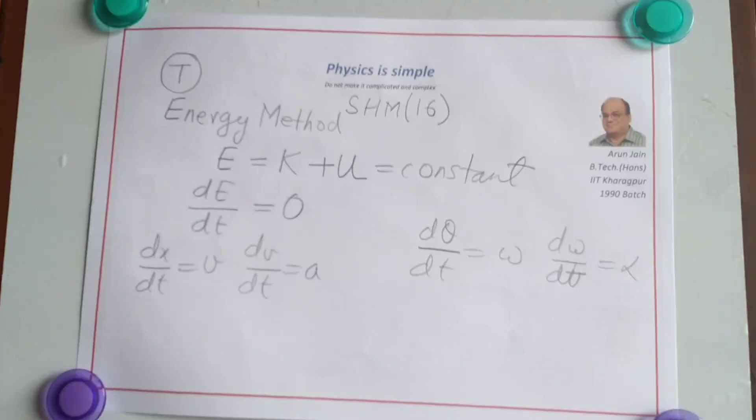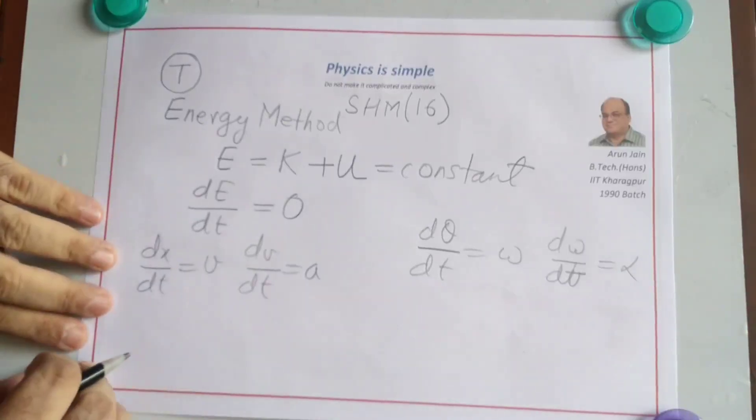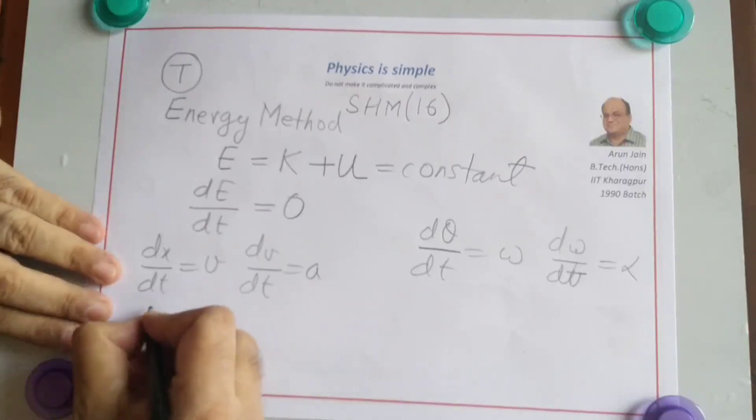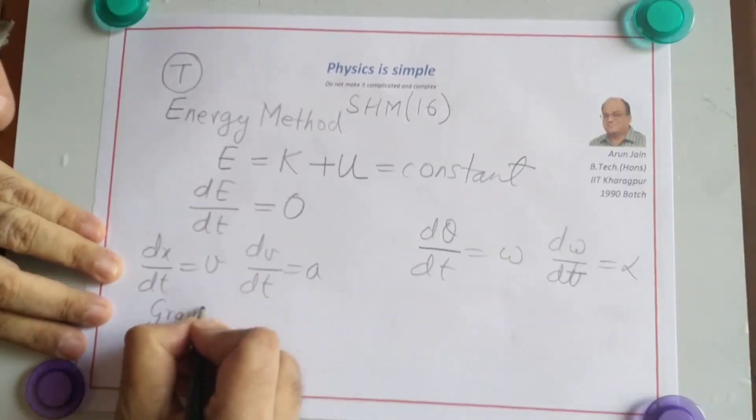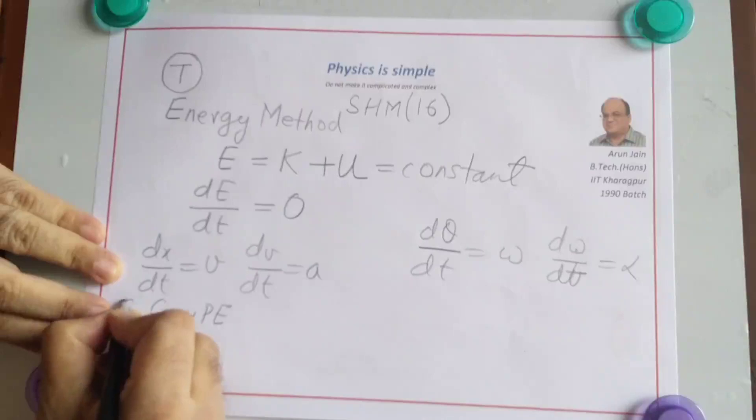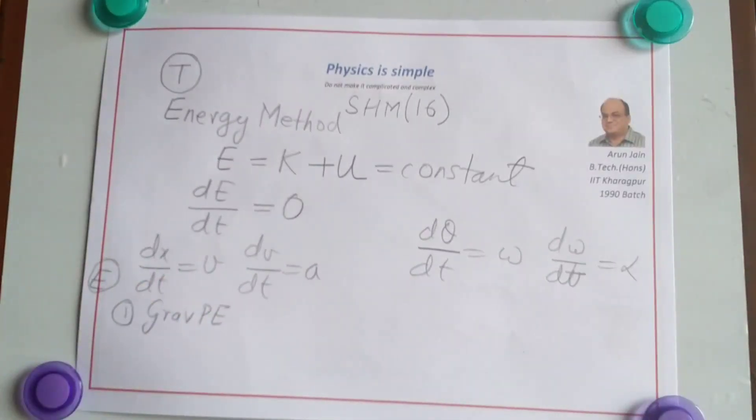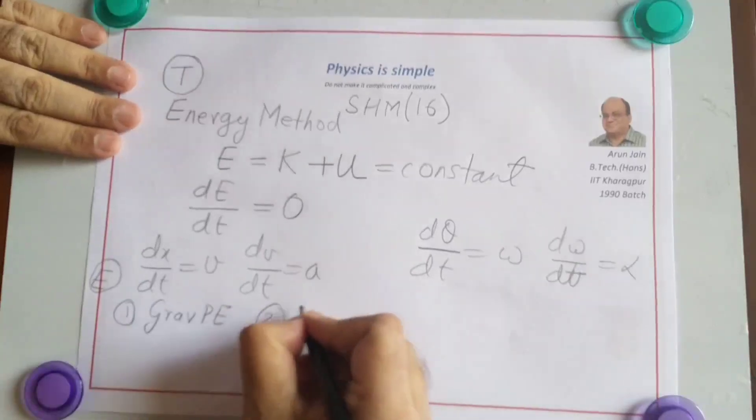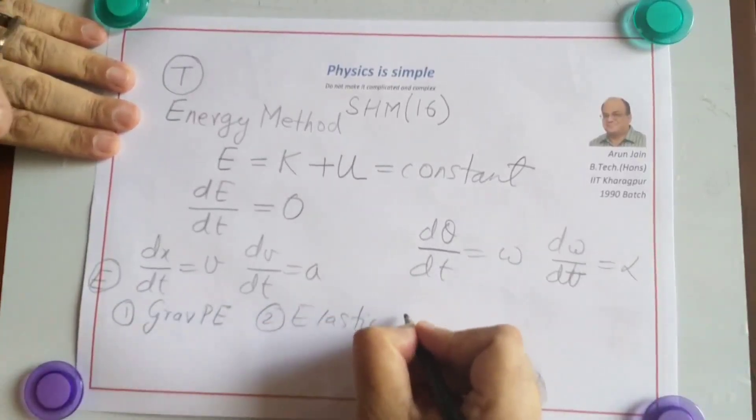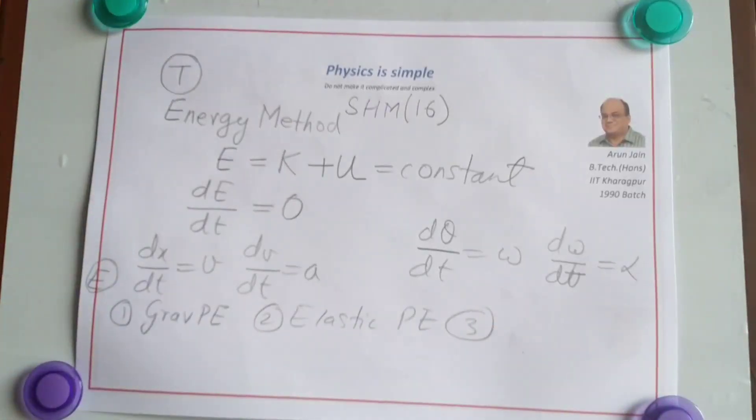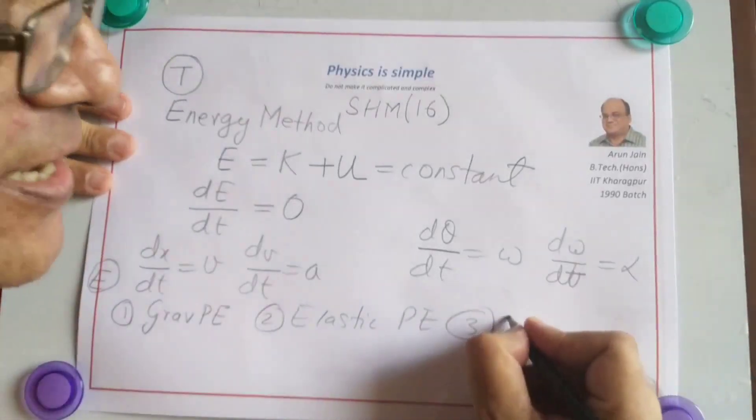Now this total energy can include various things. It can be gravitational potential energy, it can be elastic potential energy, it can be electrostatic potential energy.